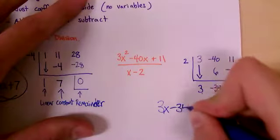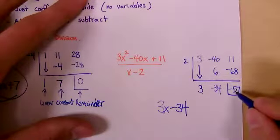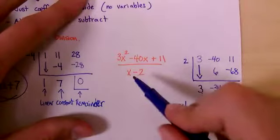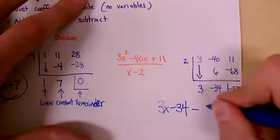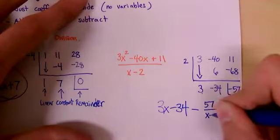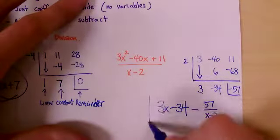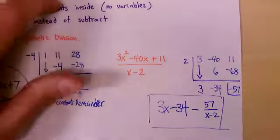And just like we would do with long division, if we have a remainder, we put that over the thing we divided by in the original problem. So it's going to be negative 57 over this. So I'll put minus, it'll be 57 over x-2, just like what you would do on long division. So this guy right here is going to be your answer.